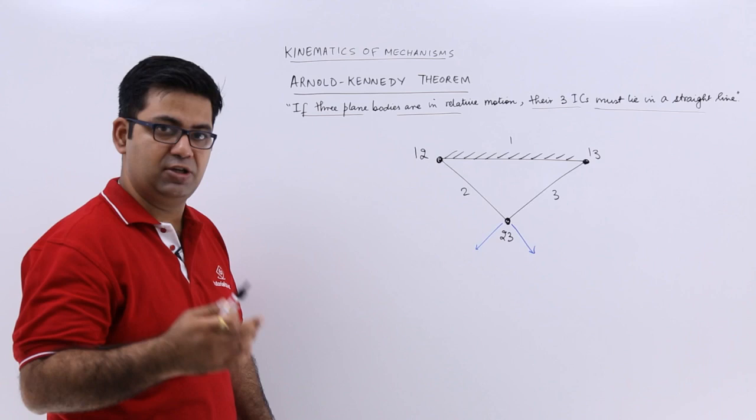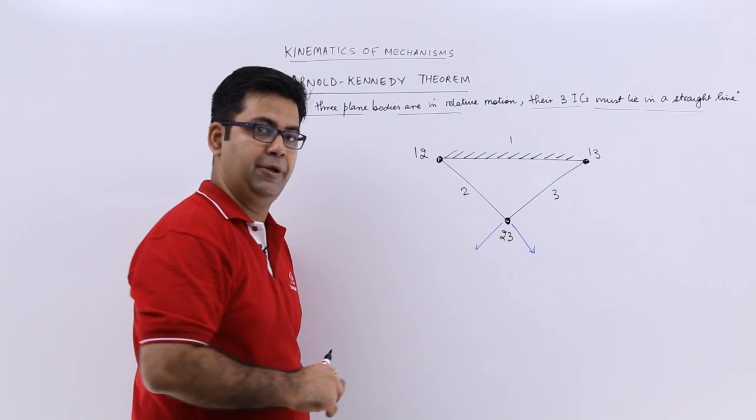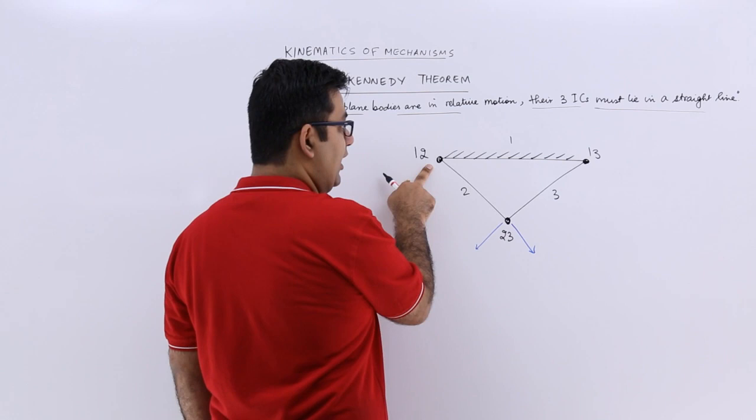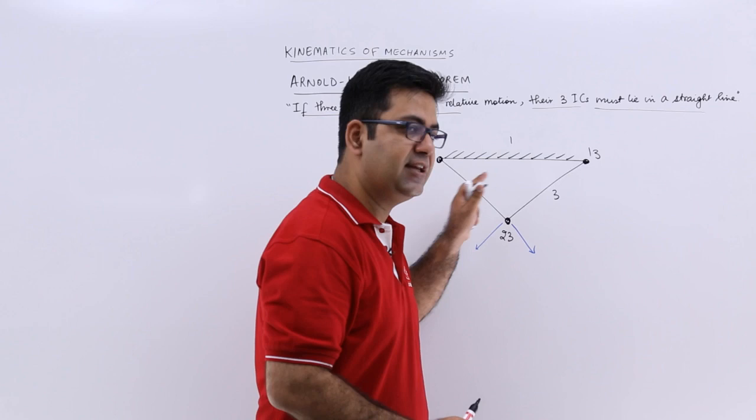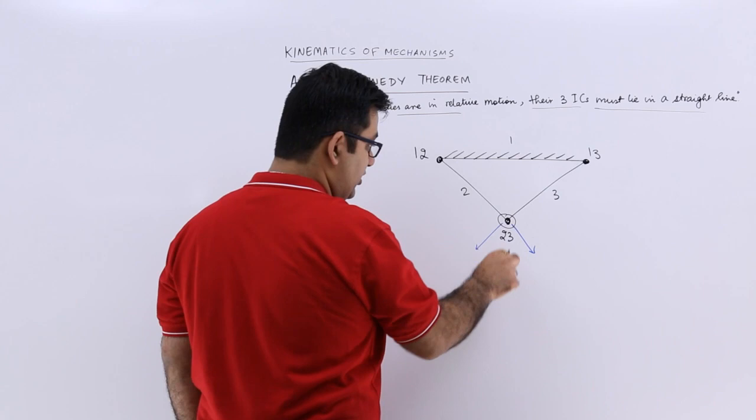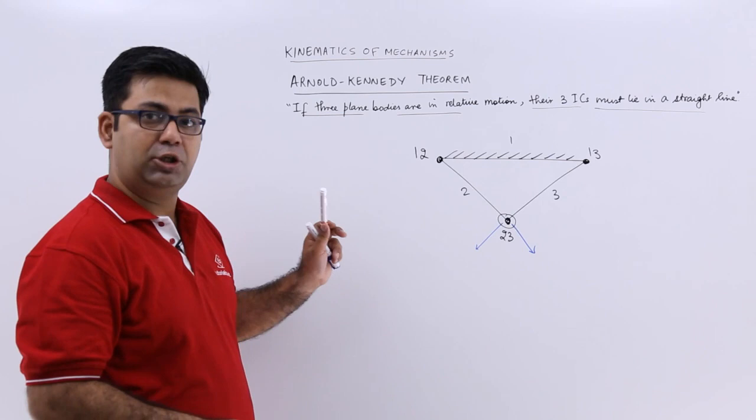Now we look at this arrangement of three links: 1, 2, and 3. If you look at the IC of links 1 and 2 (which is 1-2) and the IC of links 1 and 3 (which is 1-3), they lie in the same line. But the IC of links 2 and 3 (which is 2-3) is not lying in the same line as 1-2 and 1-3. Now this is true as per this configuration, but it is not true as per the Arnold Kennedy theorem. Why?